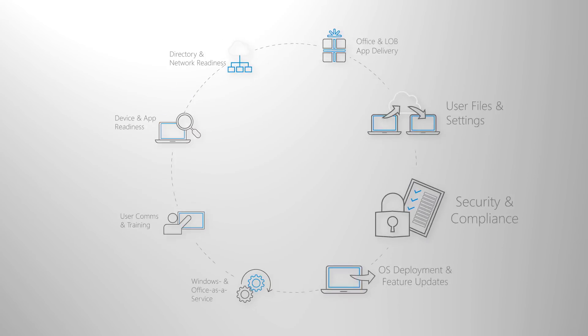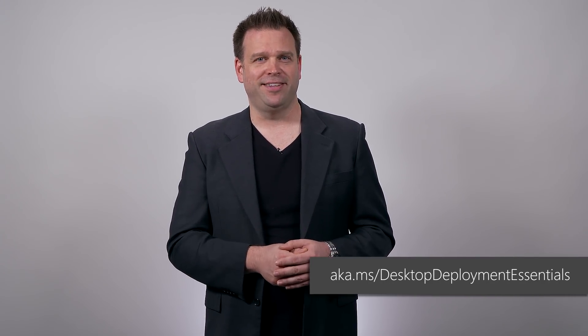So that was a quick run-through of your options for migrating user files and settings as part of your desktop deployment. Next up on the deployment process wheel, we'll cover your considerations for security and compliance controls as you shift to Windows 10 and Office 365 Pro Plus, along with the things to keep in mind if you're coming from Windows 7. To learn more about what we covered today, visit the Modern Desktop Deployment Center and keep following our Desktop Deployment Essentials series here on Microsoft Mechanics. Thanks for watching.